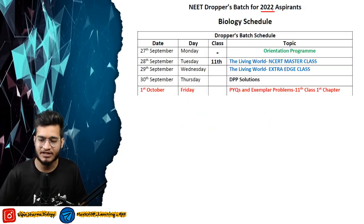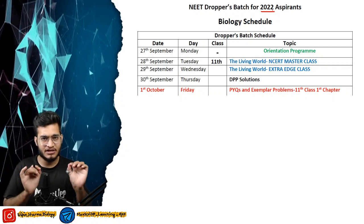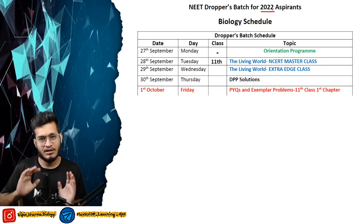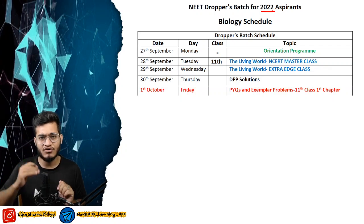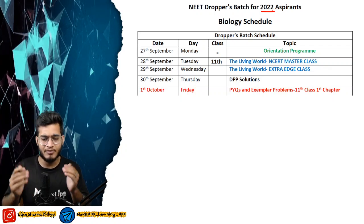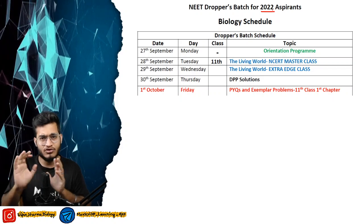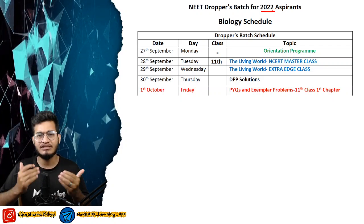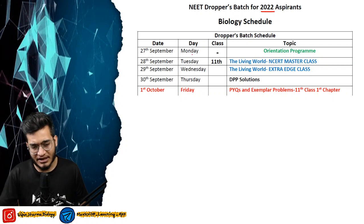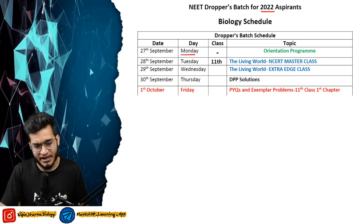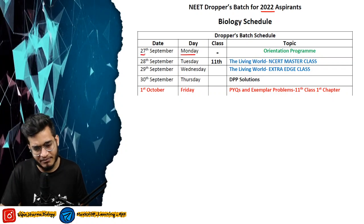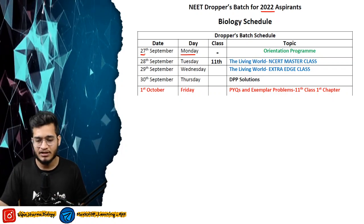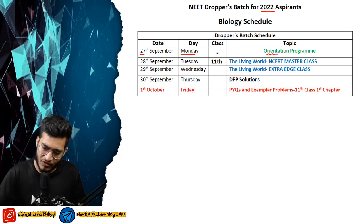For NEET 2022 aspirants, the physics and chemistry schedule has already been given by Nitesh Sir and Love Sir, and is available on the app. My schedule will also be available on the app and on Telegram. Our things will start from Monday, that is 27th of September 2021. On that day you will get an orientation program.